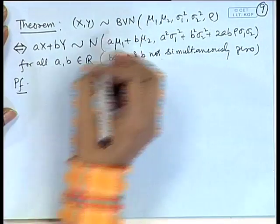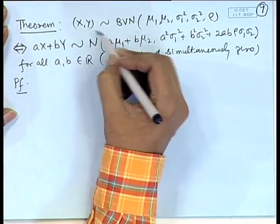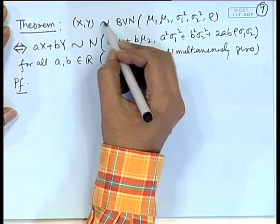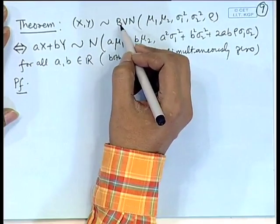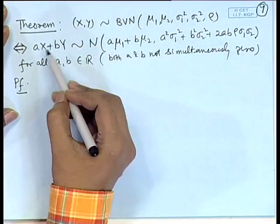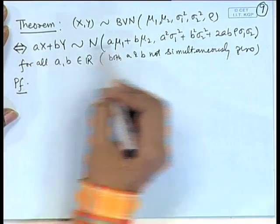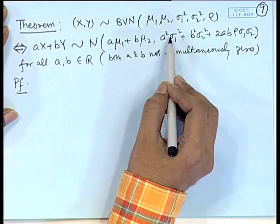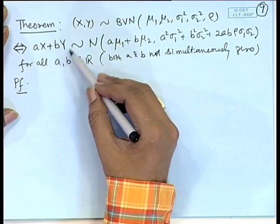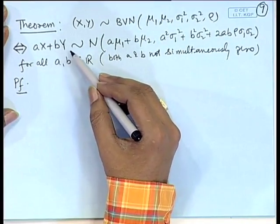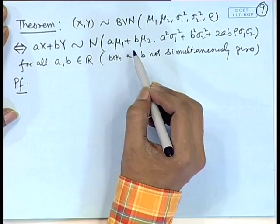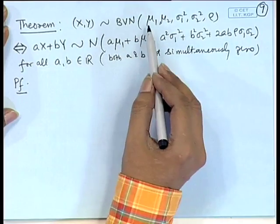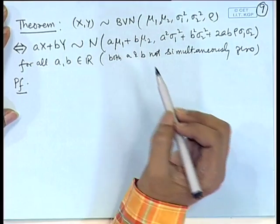This is a very strong property because it says that given the joint distribution is bivariate normal, any linear combination will be univariate normal. Conversely, given that every linear combination is univariate normal, the joint distribution will be bivariate normal.